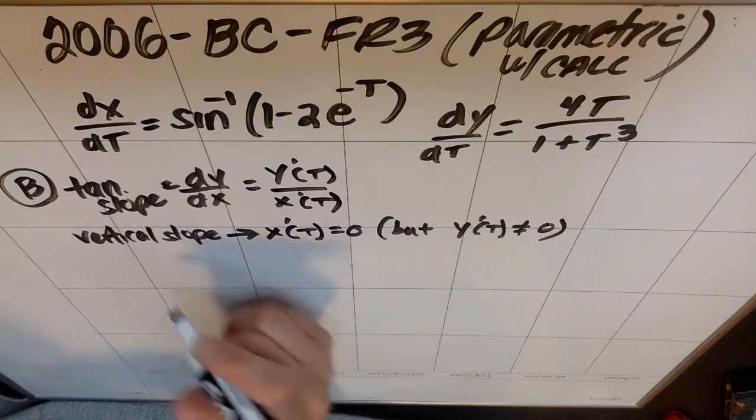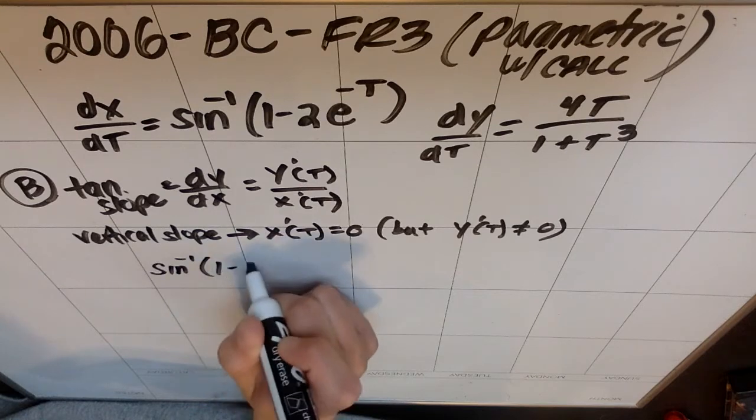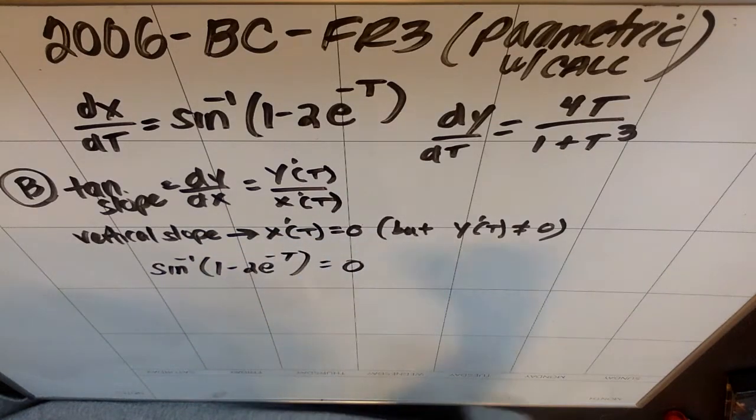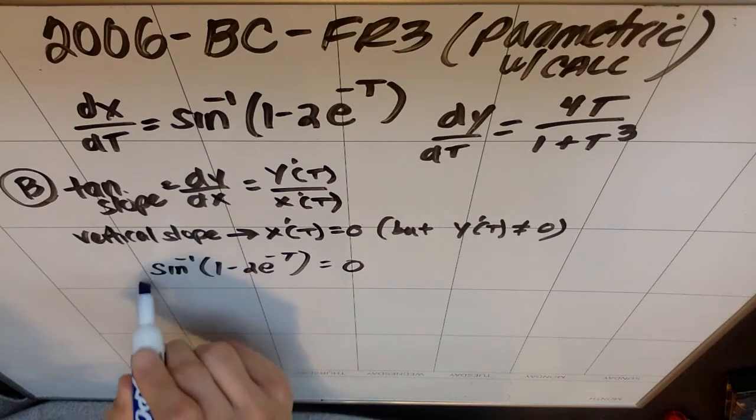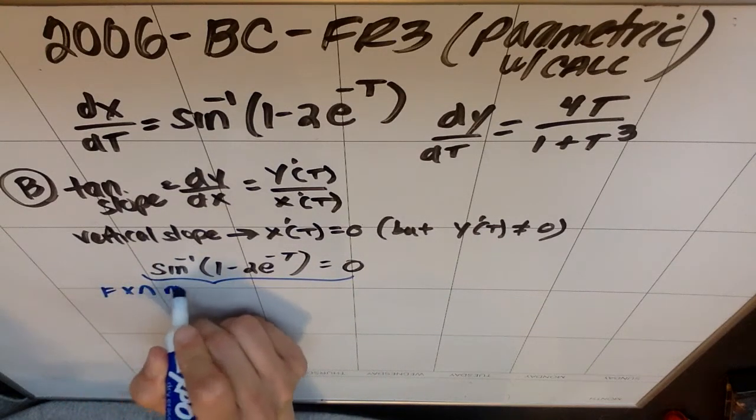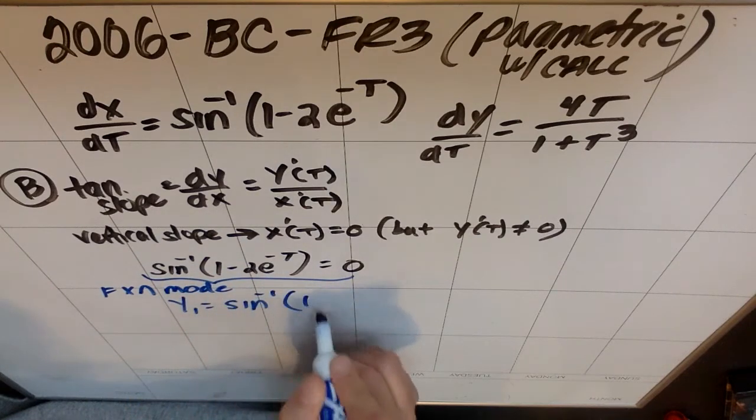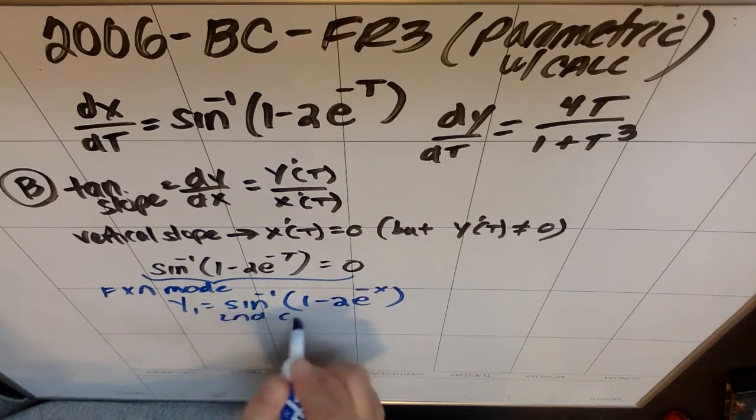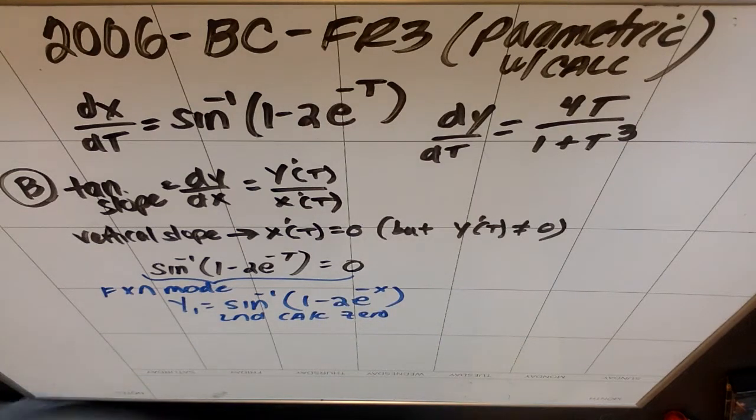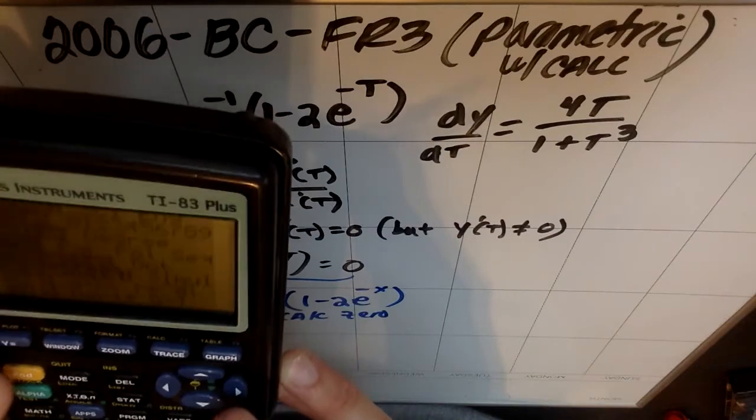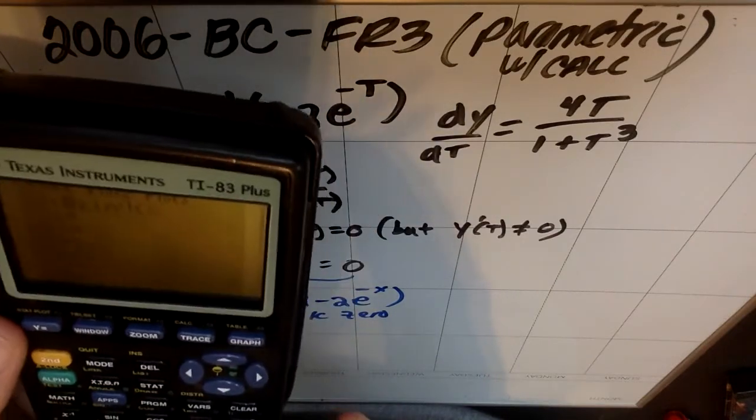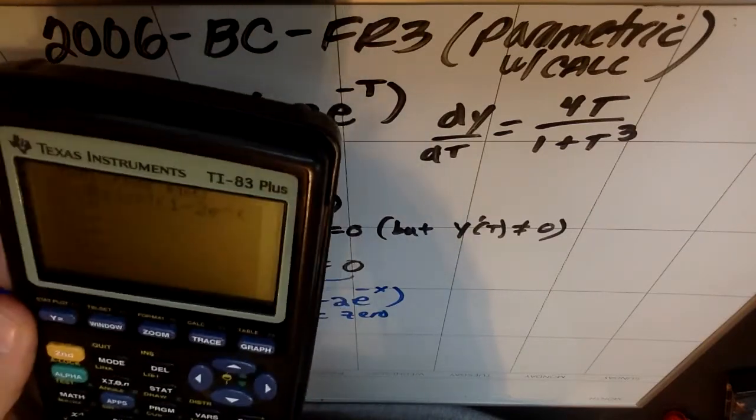So what we're looking for is when does this denominator equal 0? You want to know when the inverse sine of 1 minus 2e to the negative t is 0. You could do some solution stuff to actually solve this, and that's fine. It is a calculator section, so I'm really not sure that there's a whole lot of reason to do that. One word of caution: you can't second calc 0 in parametric mode. So you could switch your calculator to function mode just for a sec, and you could make your y1 the inverse sine of 1 minus 2e to the negative x, and then you could second calc 0.